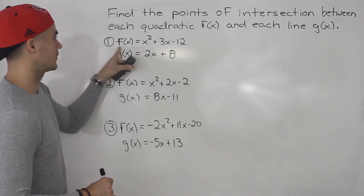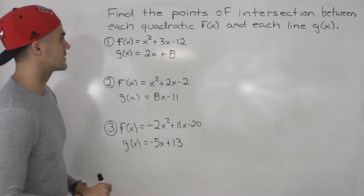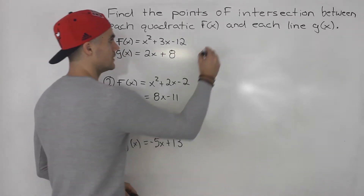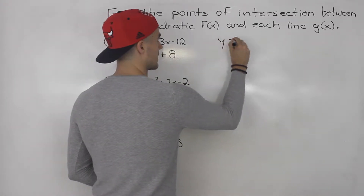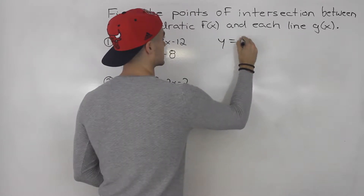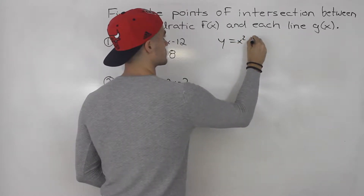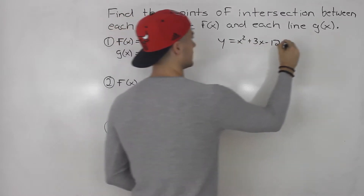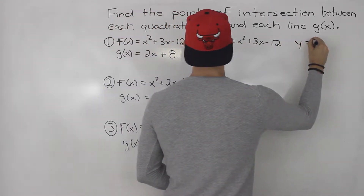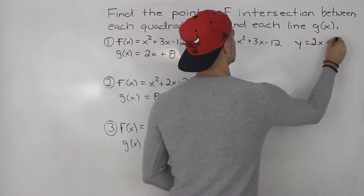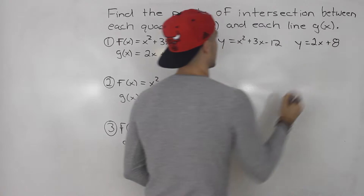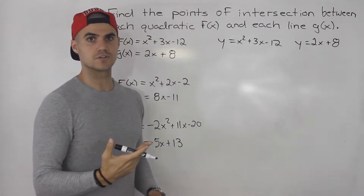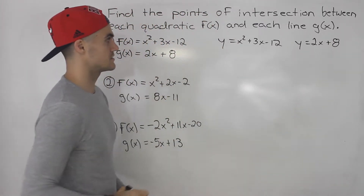Starting with number one, we have f of x equals x squared plus 3x minus 12, which I'll write as y equals x squared plus 3x minus 12. And then we have y equals 2x plus 8. So how can you solve for the points of intersection between these two?